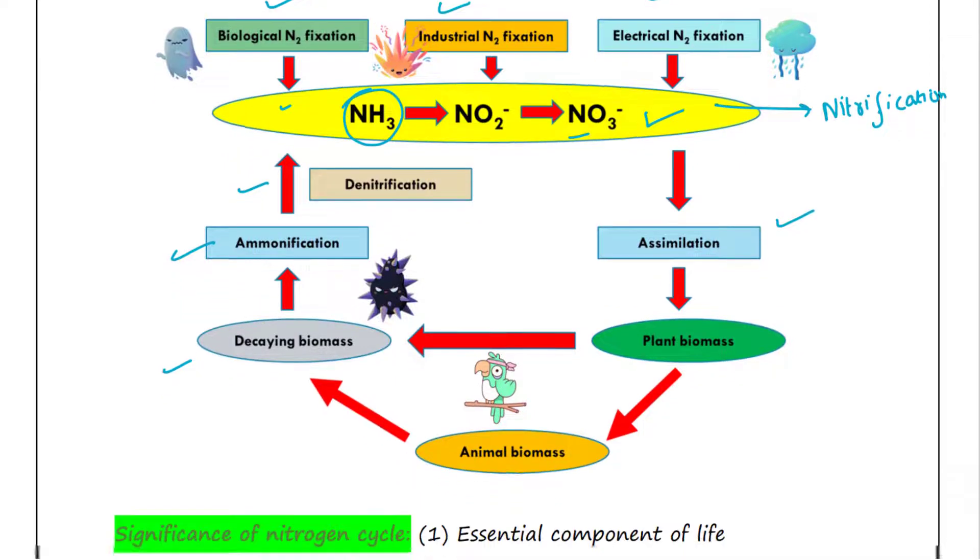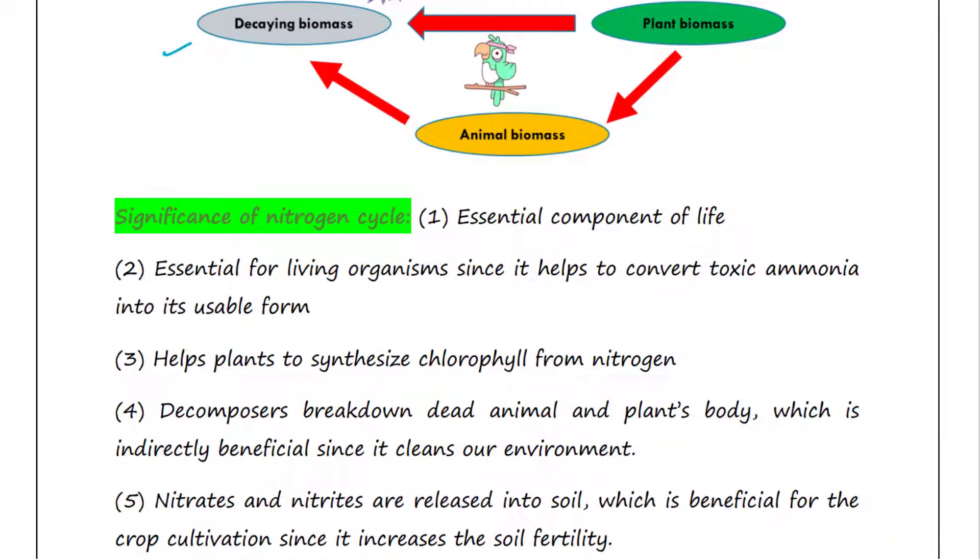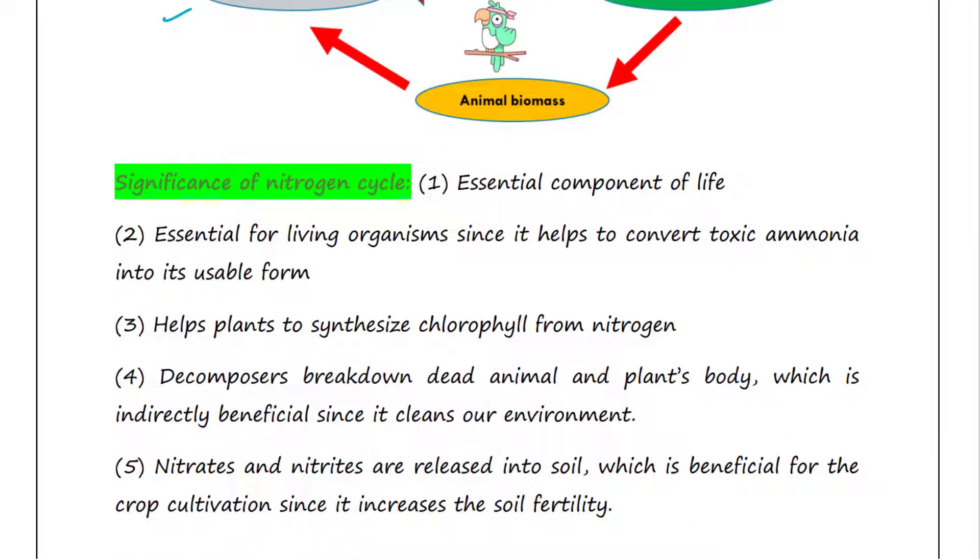Now let's talk about the significance of nitrogen cycle. First, nitrogen is an essential component of life. Second, the nitrogen cycle is essential for living organisms since it helps to convert toxic ammonia into its usable form. Next, it helps plants to synthesize chlorophyll from nitrogen.